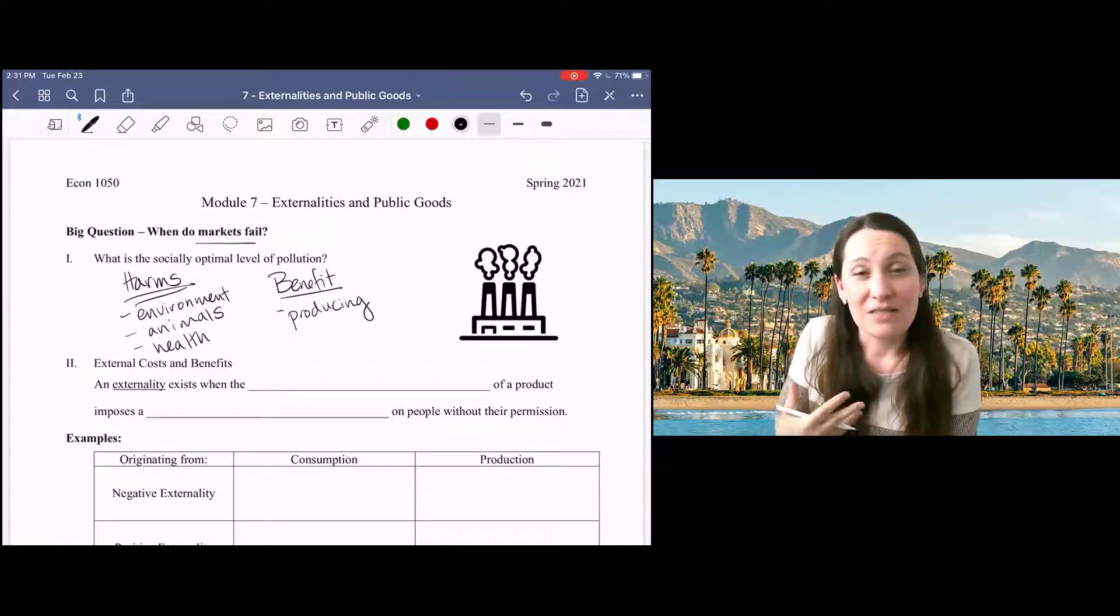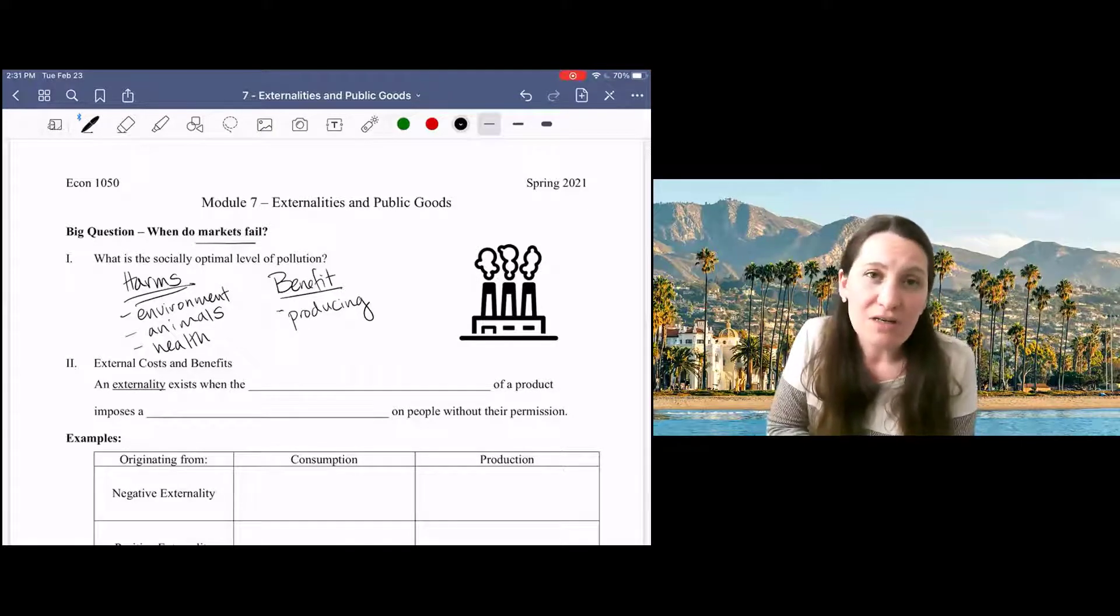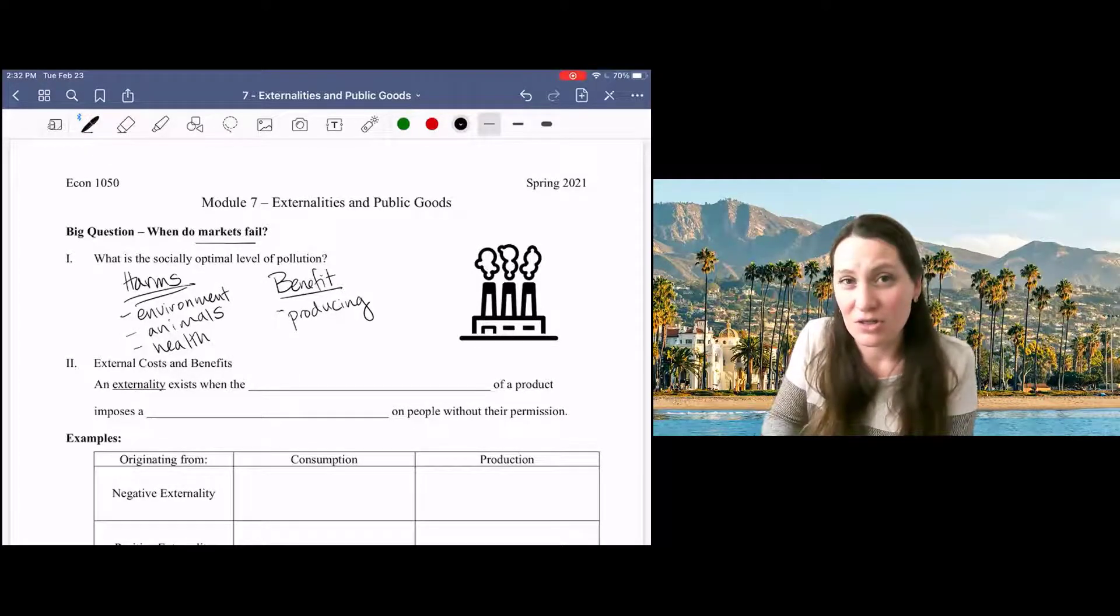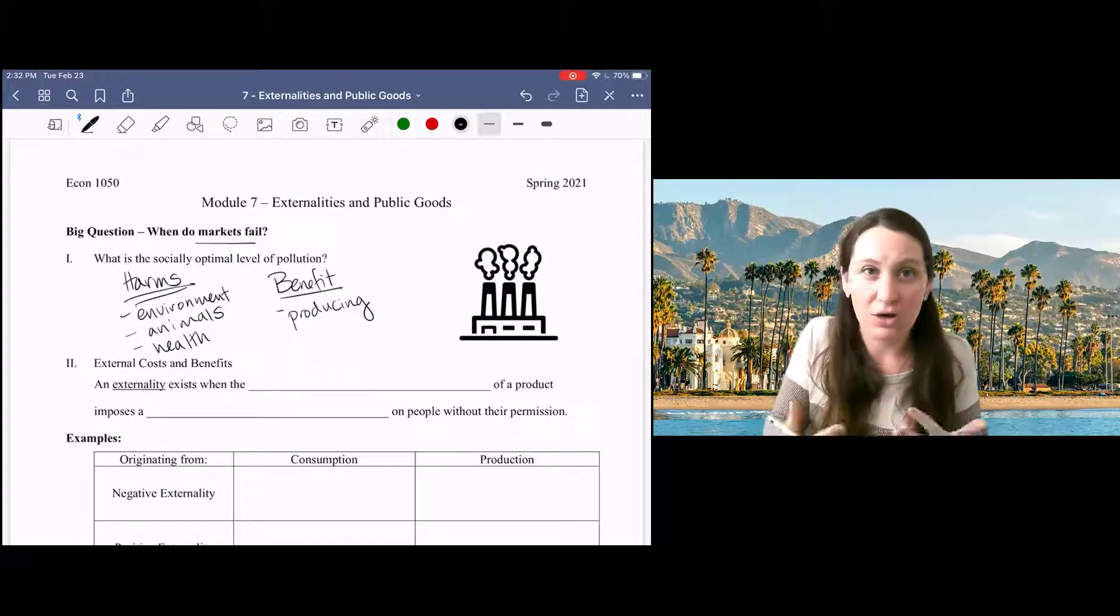A lot of times we think about pollution as so bad that we aim to reduce pollution to zero. Reducing pollution to zero is not necessarily socially optimal. In the broadest sense of the term, pollution might refer to any impact that humans have on our environment.